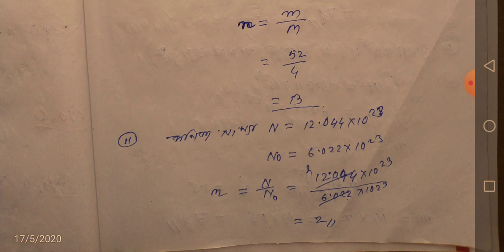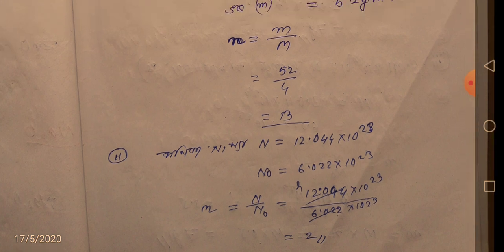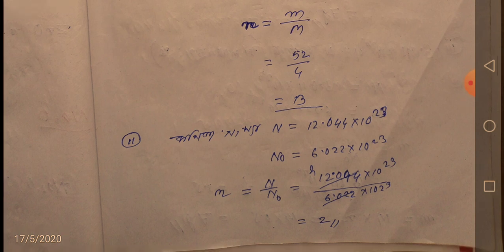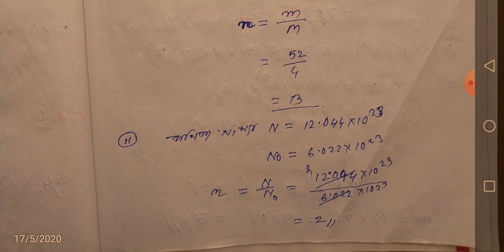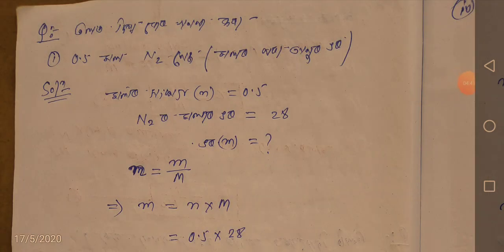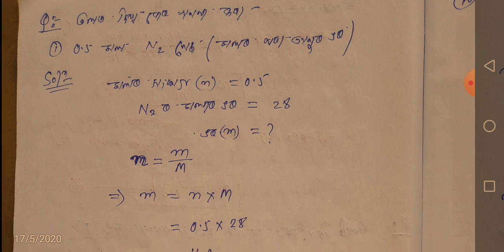The product is n. The product is 12.044 into 10 to the power 20. The product is 6.022 into 10 to the power 20. The product is small n equal to n by N₀. The result is approximately 4.05 grams and 5.0 grams.